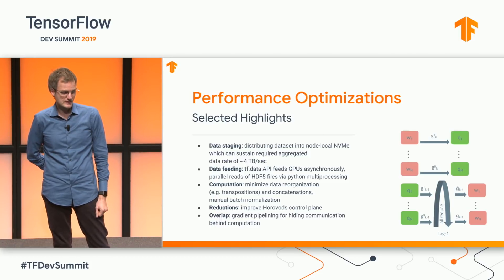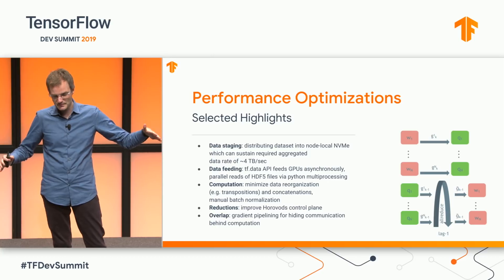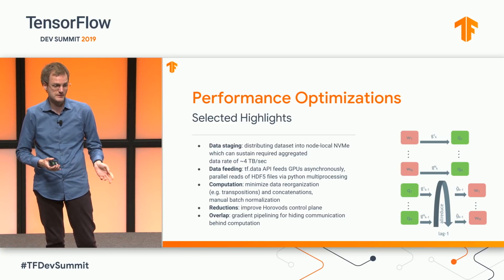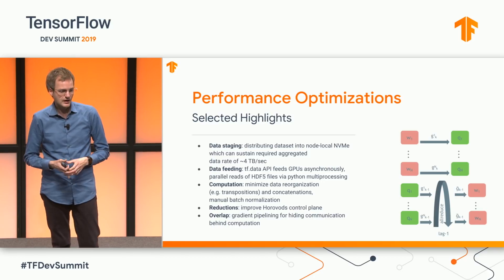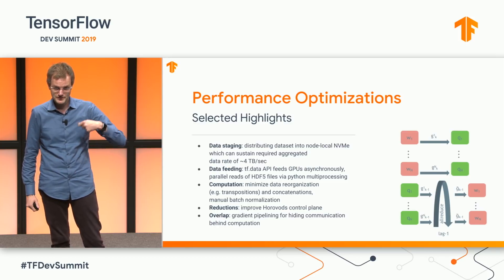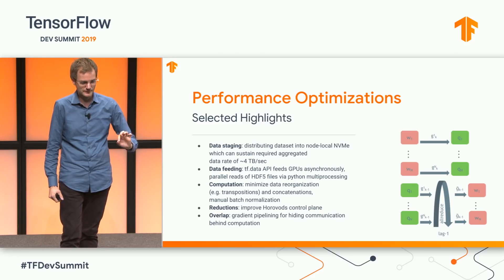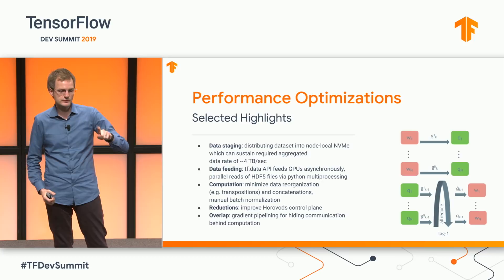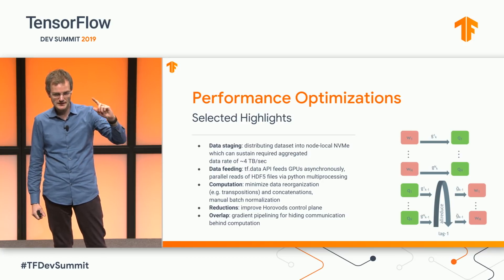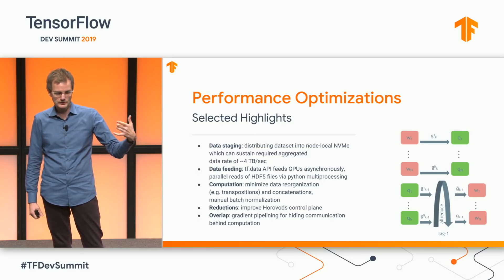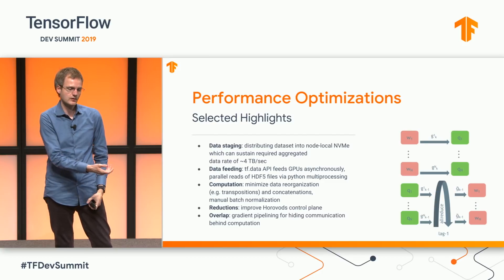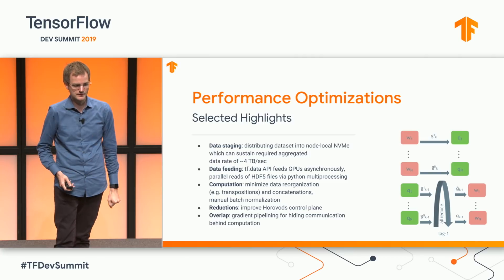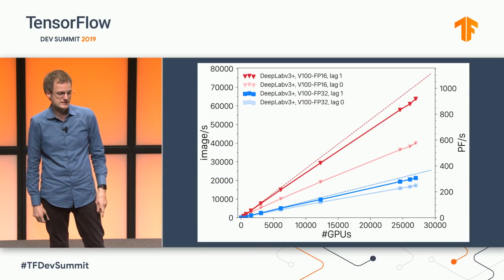Performance optimizations are necessary throughout the whole pipeline. Starting from the data — where do you read it, how do you stage it, how do you feed it efficiently to the accelerator — the accelerators are so fast that they'll stall waiting for data if not fed efficiently. For computation, you want to minimize data reorganization, and reductions must be very efficient. We also used a gradient pipelining approach: on the GPU you compute fresh gradients, while on the CPU you asynchronously reduce the old gradients from the last step and integrate them into the model, overlapping the two steps.